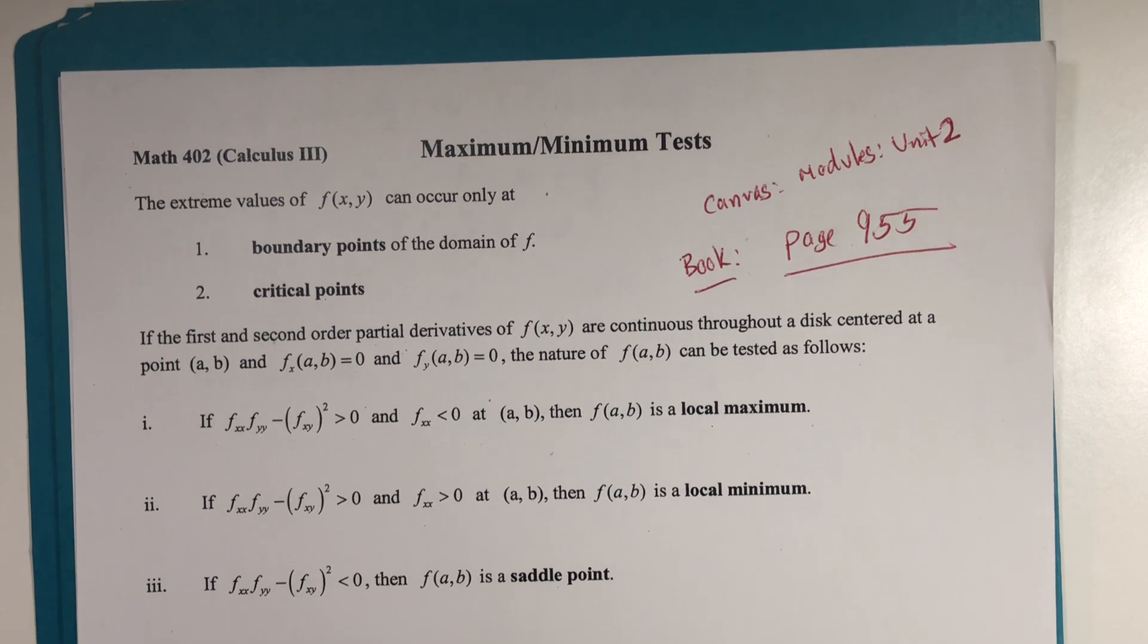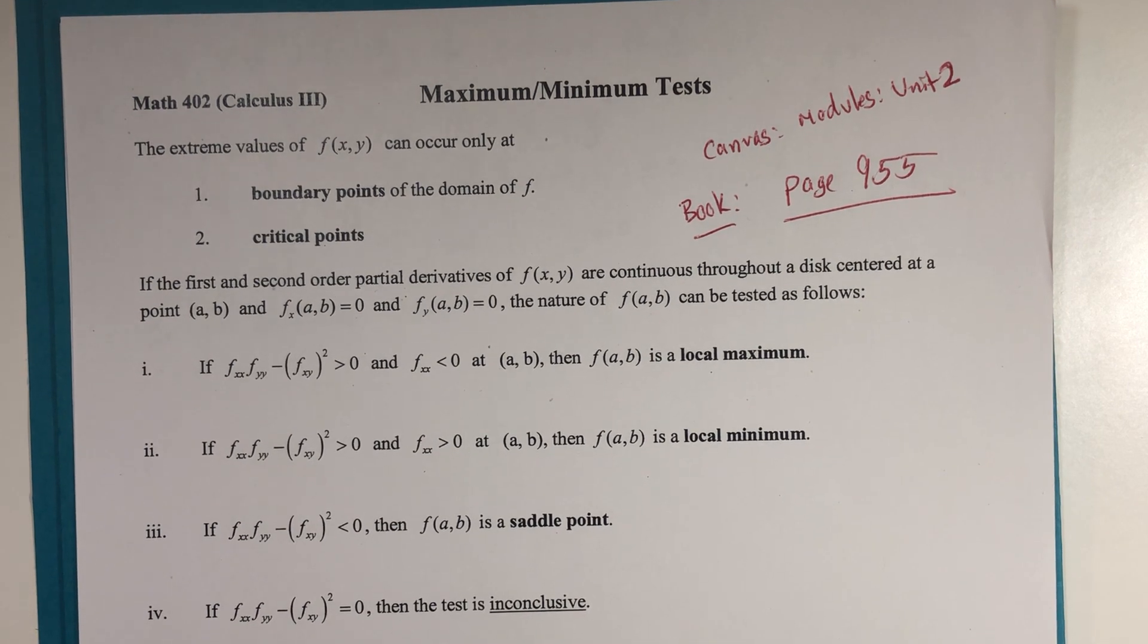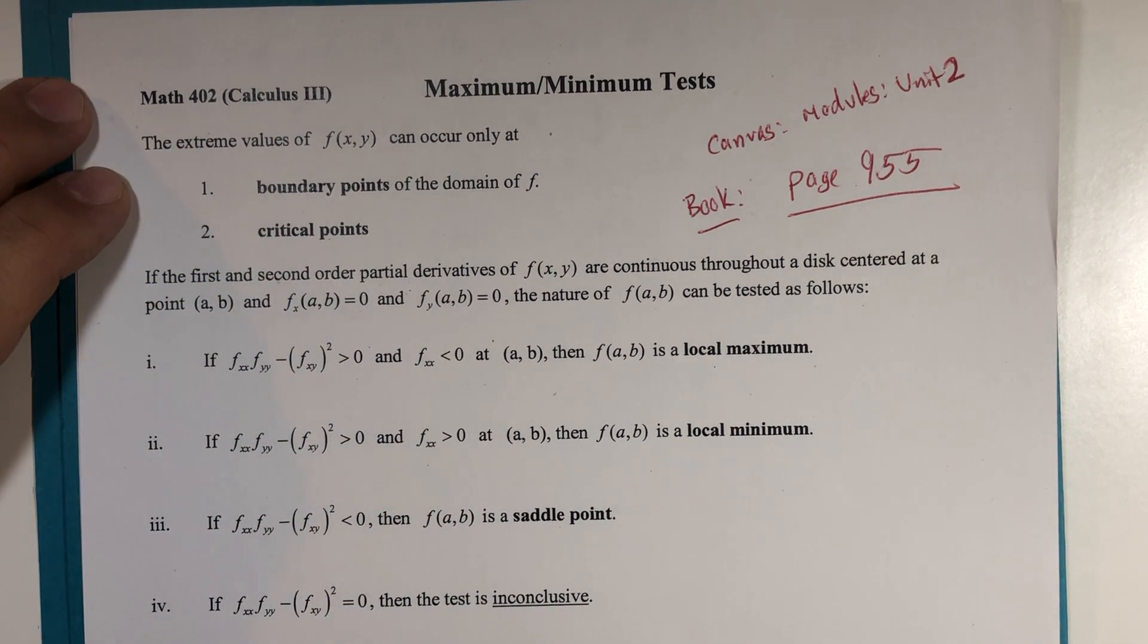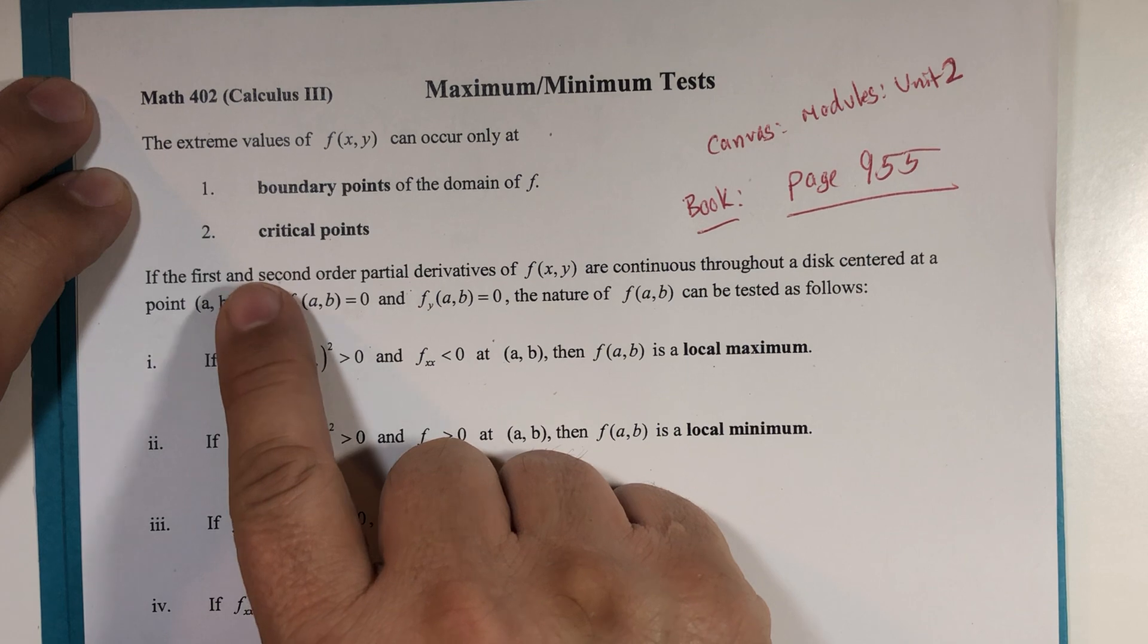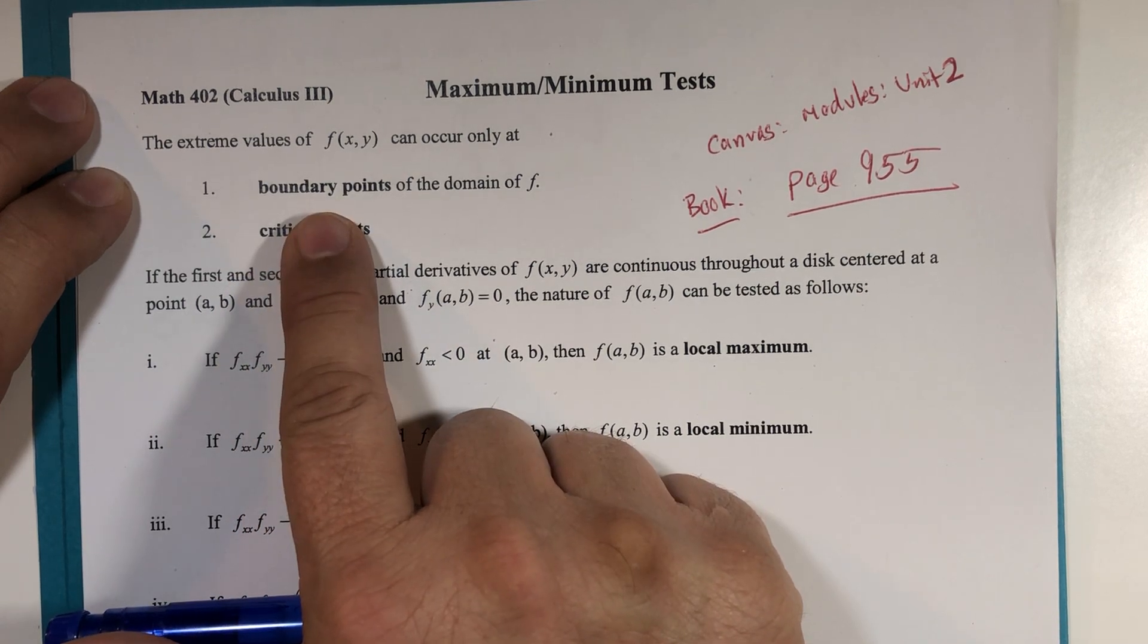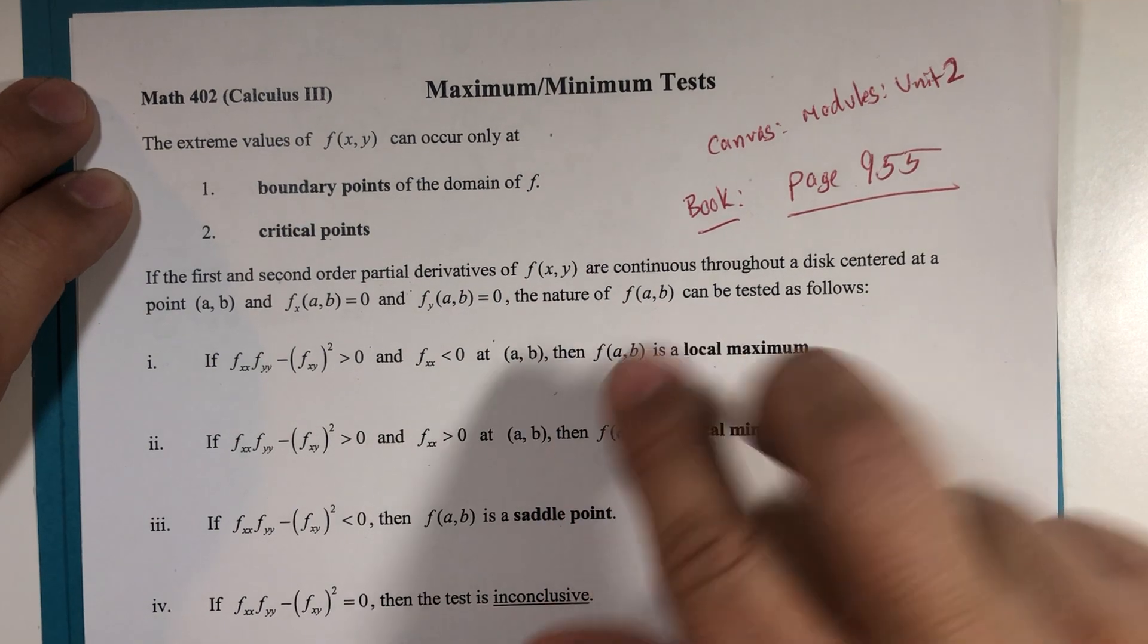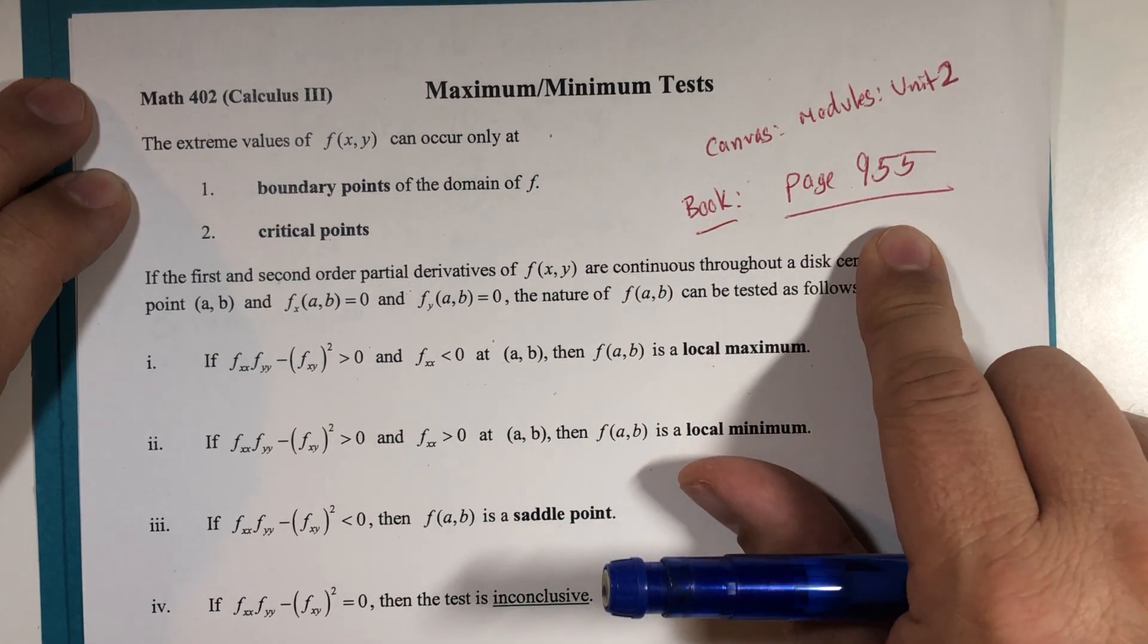This is called the second partials derivative test, or the second derivative test for a function of x and y. I'm not asking you to memorize these, but it mentions if you have an extreme value, max or min, they can only occur at perhaps some end point, see calculus one, or at one of our critical points. And you can find this document in our canvas under modules and unit two. But in our book, you can find it on page 955.